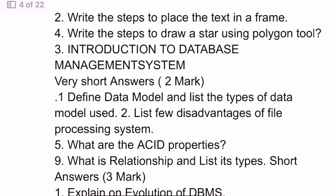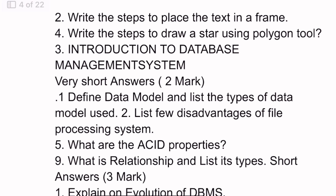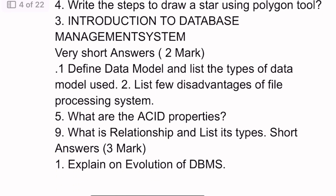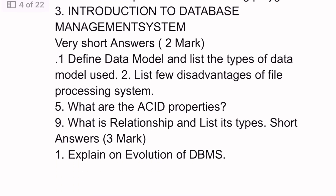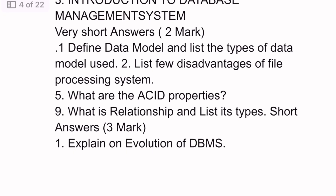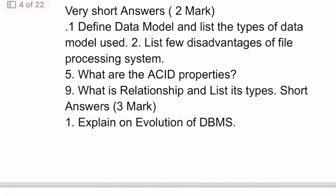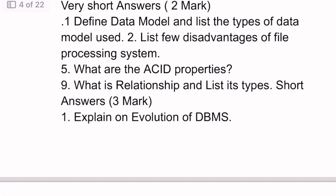Chapter Three: Two mark questions — 1st question: data model and list types of data model. 2nd question: disadvantages of file processing system. 5th question: what are the ACID properties. 9th question: relationship and list its types.